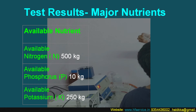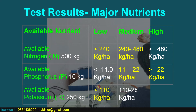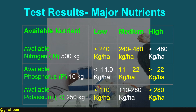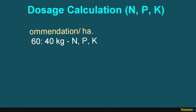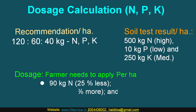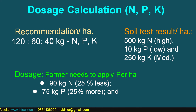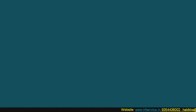If we compare the test result with the standards, we will find that nitrogen is high, phosphate is in the low category, and potassium is in the medium category. In this case, the farmer needs to apply 25% less than recommended nitrogen — that is 90 kg — 25% more of the recommended phosphate — that is 75 kg — and 100% of K as it is in the medium category, that is 40 kg potassium per hectare.